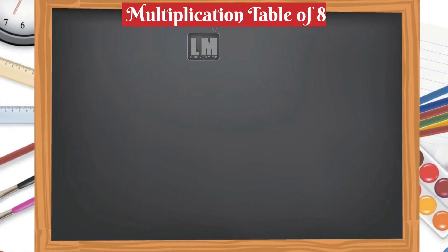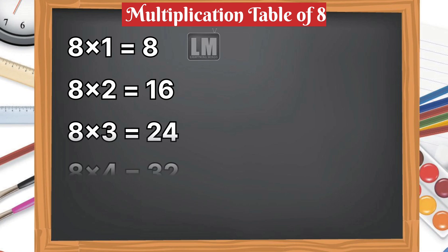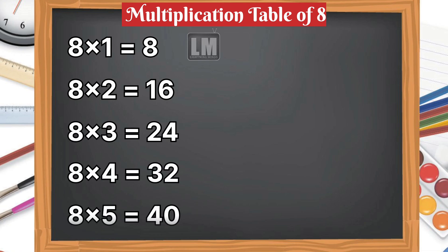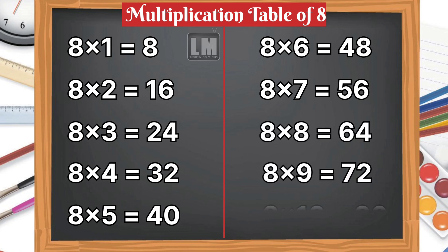Let's learn multiplication table of 8. 8 1s are 8, 8 2s are 16, 8 3s are 24, 8 4s are 32, 8 5s are 40, 8 6s are 48, 8 7s are 56, 8 8s are 64, 8 9s are 72, 8 10s are 80.